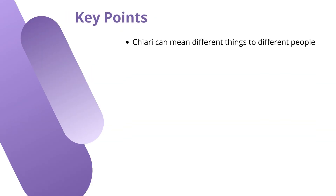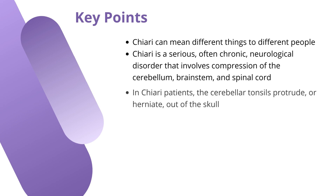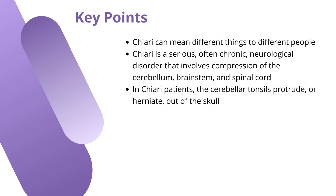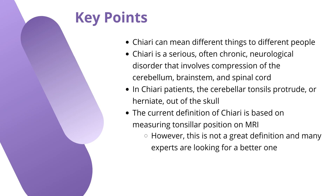To summarize, Chiari can mean different things to different people. Chiari is a serious, often chronic neurological disorder that involves compression of the cerebellum, brainstem, and spinal cord. In Chiari patients, the cerebellar tonsils protrude or herniate out of the skull. The current definition of Chiari is based on measuring tonsillar position on MRI. However, this is not a great definition and many experts are looking for a better one.